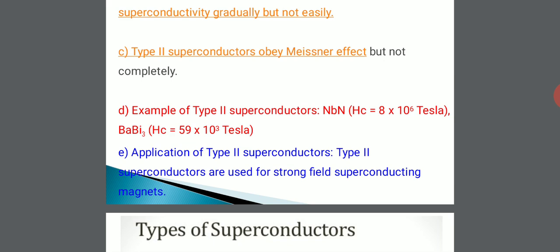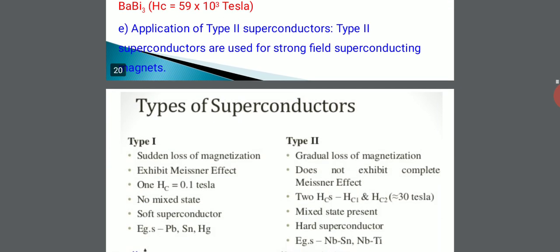You can see the significant difference between the critical magnetic fields of type 1 and type 2 superconductors. The applications of type 2 superconductors include producing very high magnetic fields.